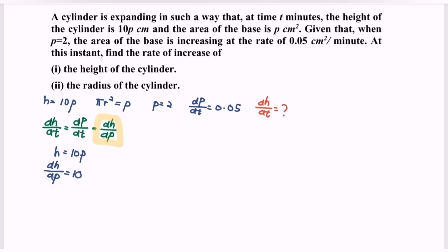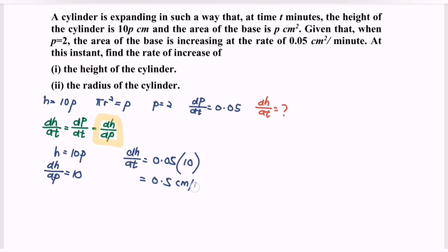Now substitute: dh/dt is equal to dp/dt, which is 0.05, multiplied with dh/dp, which is 10. So the answer is 0.5 cm per minute for dh/dt.